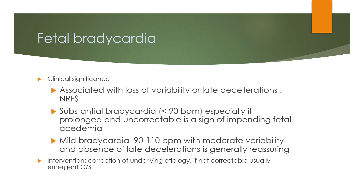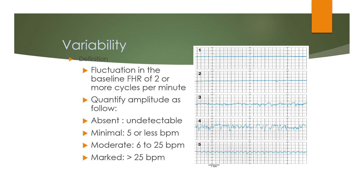Intervention for bradycardia involves correction of the underlying etiology; if not correctable, usually an emergency caesarean section. Variability is defined as the fluctuation in the fetal heart rate baseline of 2 or more cycles per minute. Amplitude is quantified as: absent — undetectable; minimal — 5 or less beats per minute; moderate — 6 to 25 beats per minute; and marked — more than 25 beats per minute.